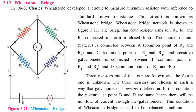Wheatstone Bridge. In 1843, Charles Wheatstone developed a circuit in order to measure unknown resistance with reference to a standard known resistor. With a standard known resistance, he was able to determine the value of an unknown resistor. This circuit was known as the Wheatstone Bridge.